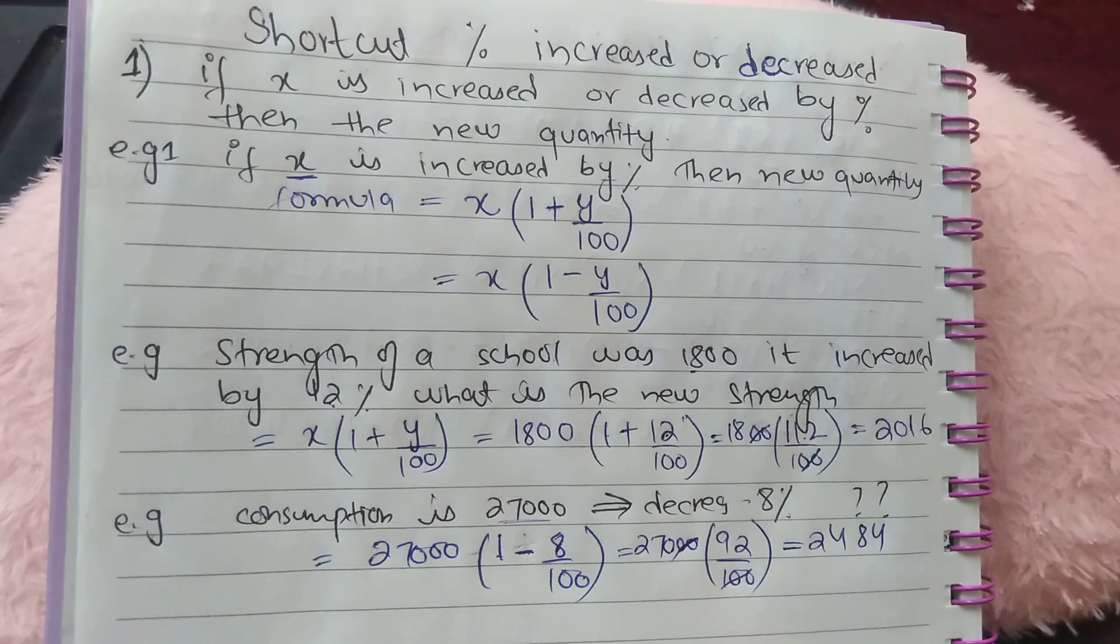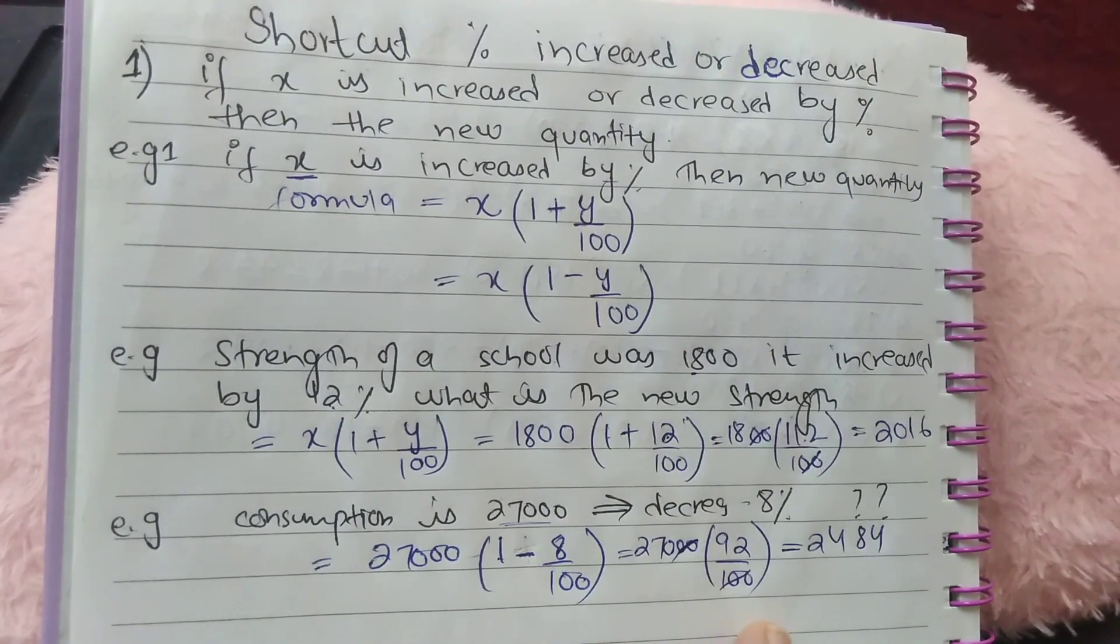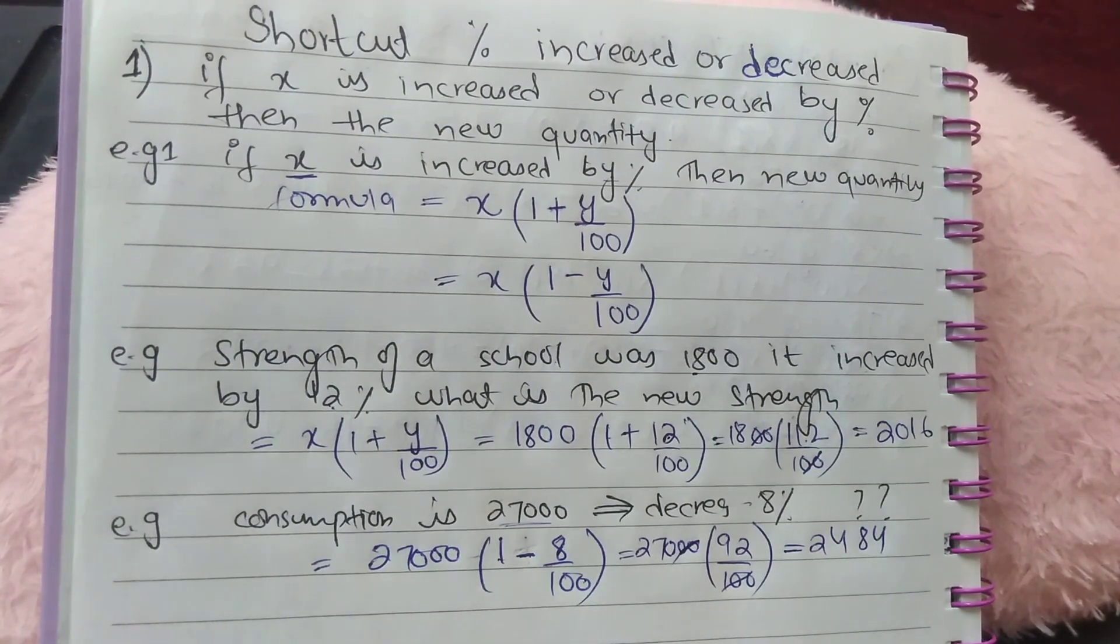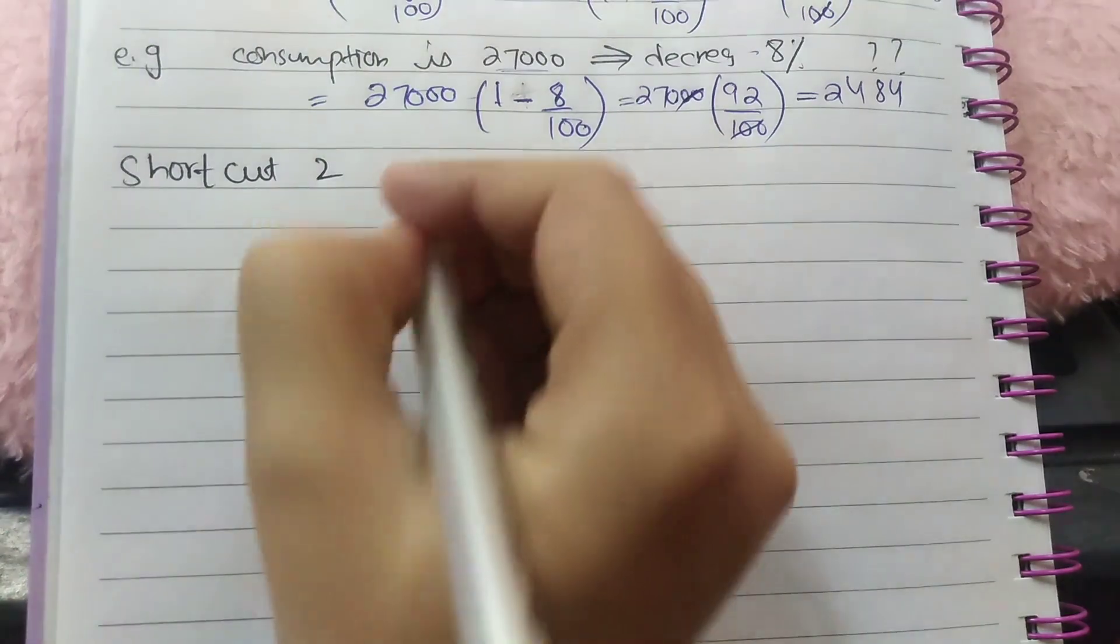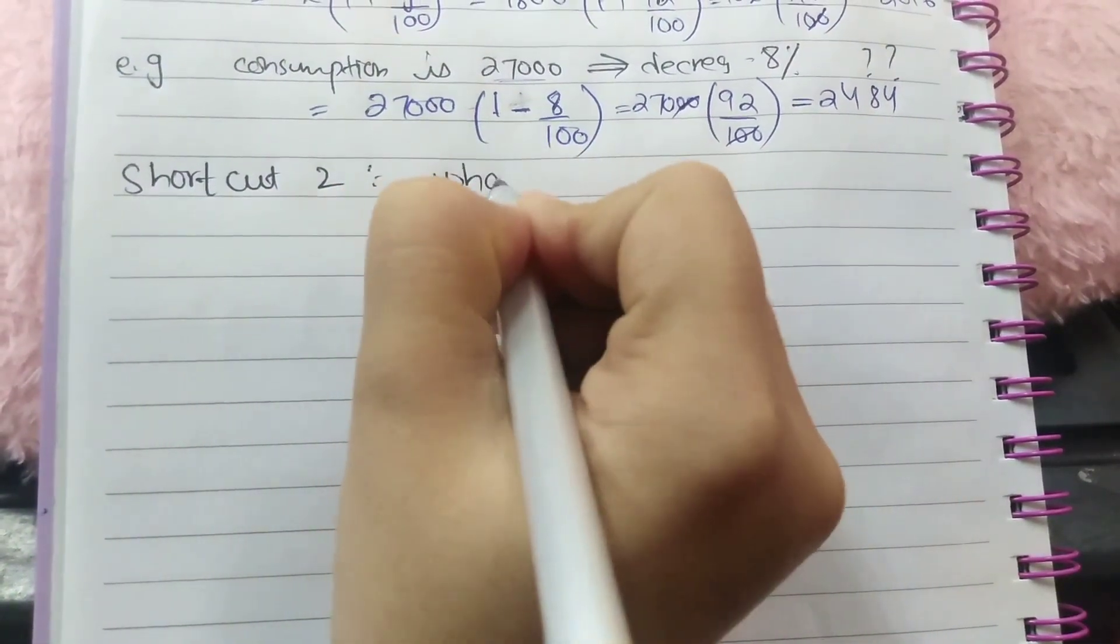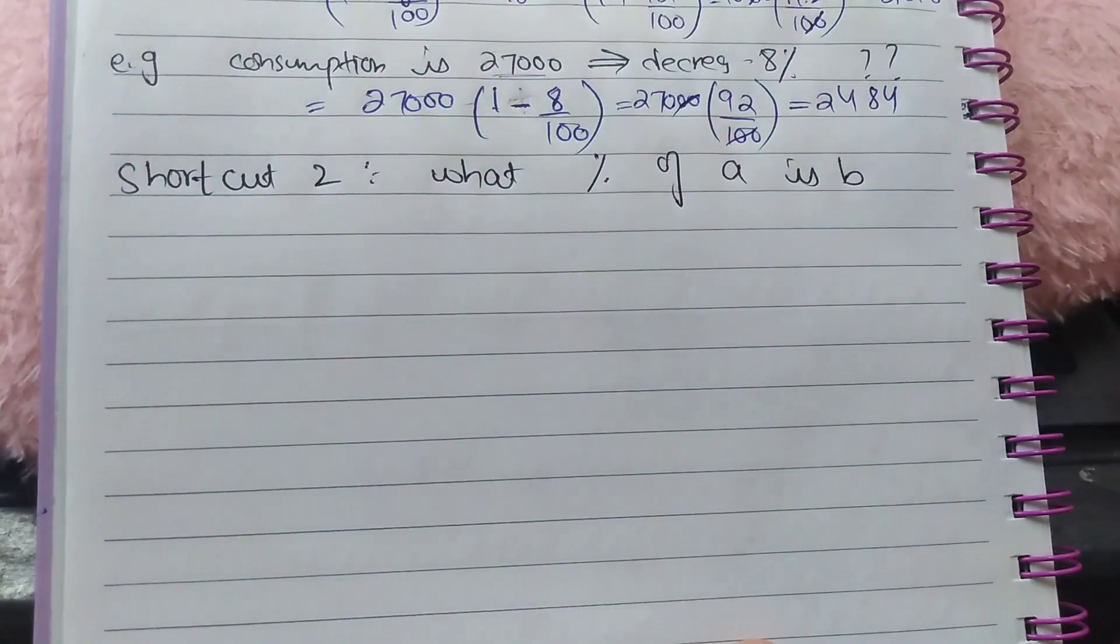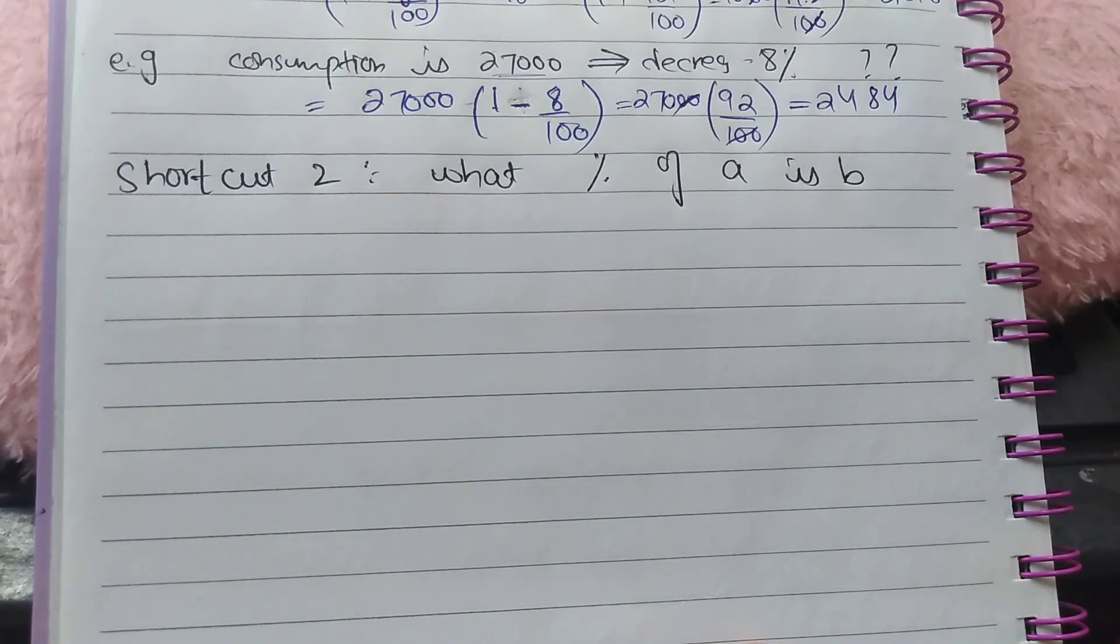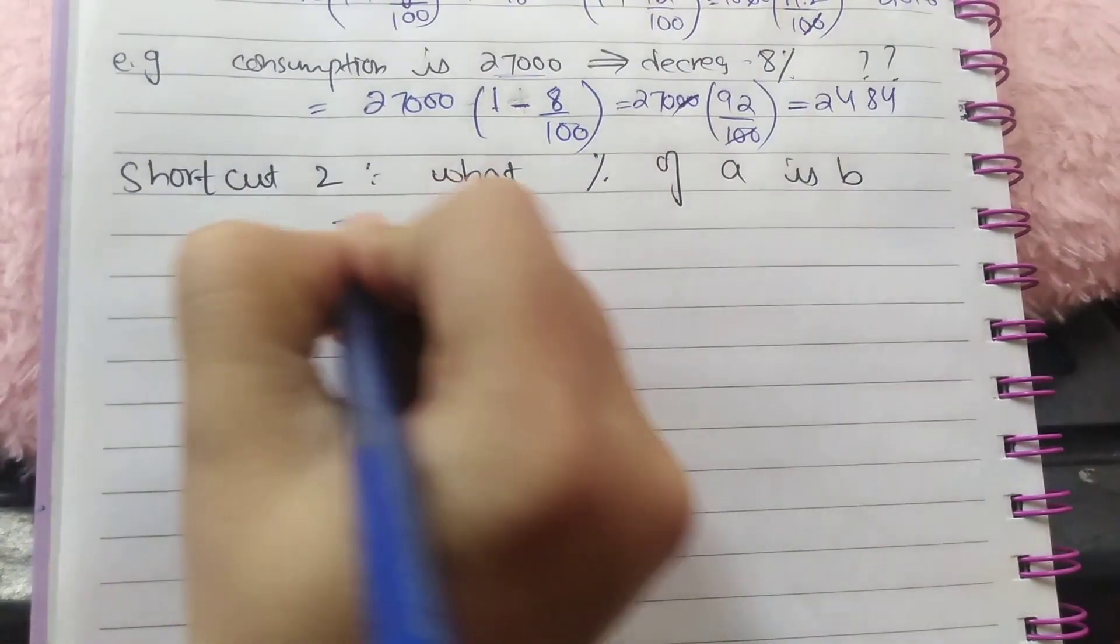So this is a shortcut trick for the question which are given as if one quantity is increased or decreased by second quantity percentage, means Y percent. Shortcut 2 is of type what percent of A is B. In such question it is given as what percent of A is B, means bigger quantity to smaller quantity.